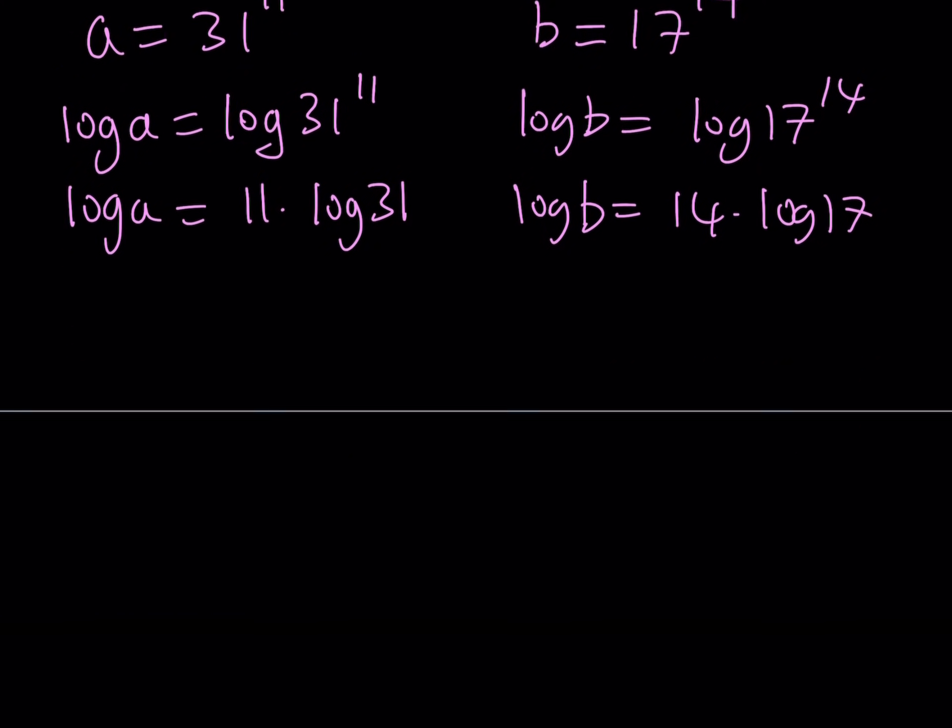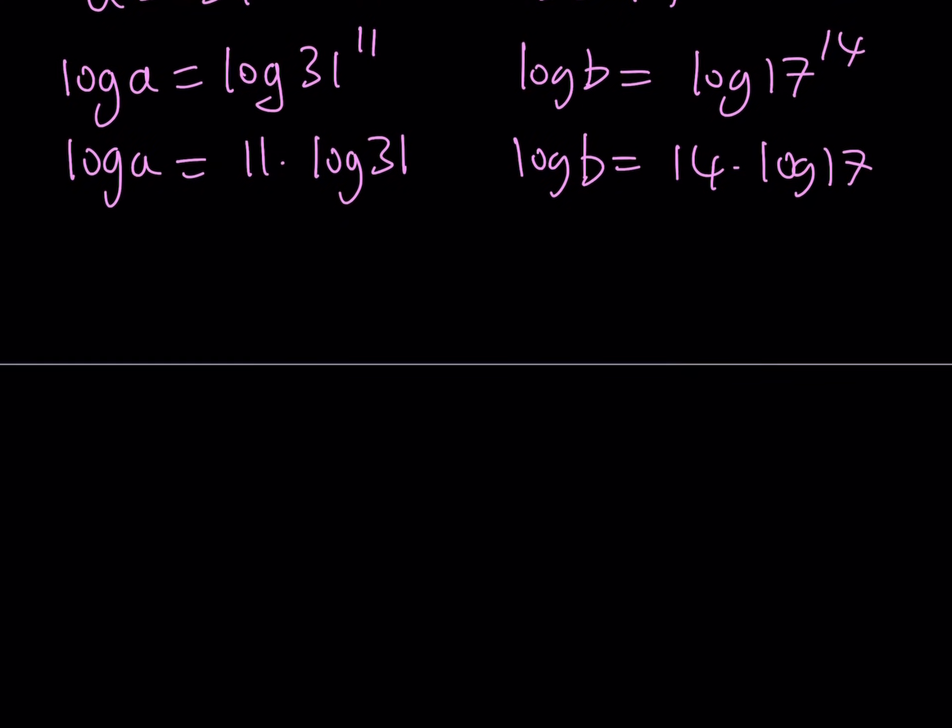So if I can find the values of log 31 and log 17, and then multiply by 11 and 14 respectively, then I'll be getting the values of log A and log B. And then I can compare those two values. When I compare those two values, what happens? Let's see what happens. This is kind of interesting.